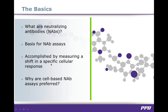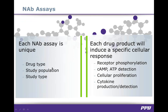This is accomplished by measuring a shift in a specific cellular response. NAB assays closely mimic the mechanism by which NABs may exert their effect in vivo, which is why they are preferred over the alternate plate-based NAB assays. Each cell-based NAB assay is unique in the sense that each drug product binds to a specific cell line and induces a specific cellular response. Additional factors impacting the final assay format include the drug product, the study population — whether healthy or diseased state — and the study phase, being either preclinical or clinical. The type of NAB assay depends on the drug's mechanism of action.